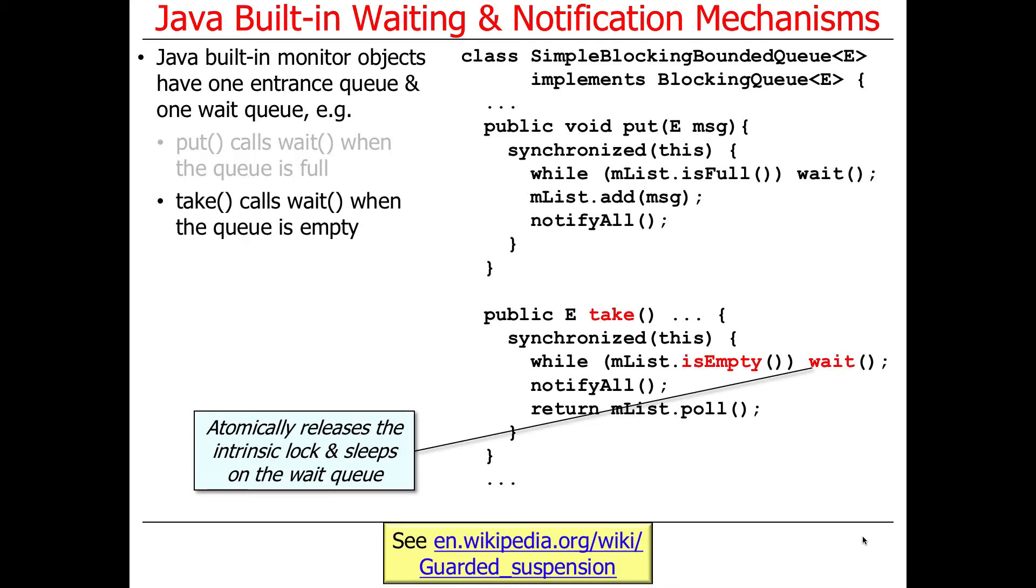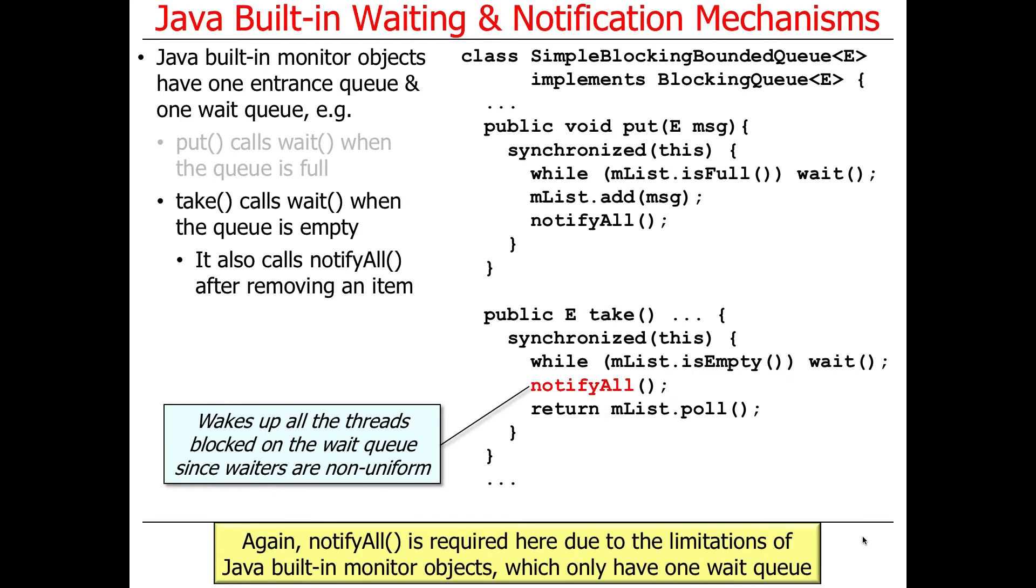Take is used to get something out of the queue, and it needs to wait if the queue is empty, or while the queue is empty. So while the queue is empty, we call wait. Once again, that will atomically go to sleep and release the lock, the intrinsic lock. That has to be atomic, otherwise chaos and insanity will break out. That's also the guarded suspension pattern.